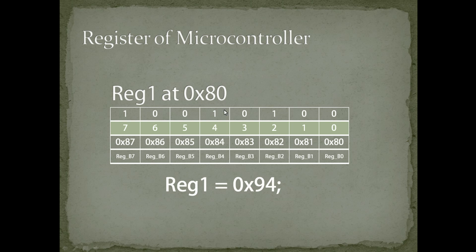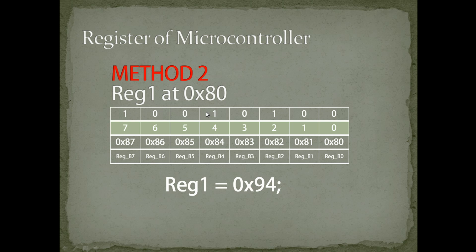I can define this address 0x80 and write reg1 equal to 0x94, so that the value 10010100 will be written to this register starting from 0x80. This is the method of writing a byte to the register in a microcontroller — Method 2. The drawback of Method 2 is that we are making bits 7, 4, and 2 as 1 by writing 0x94, but we are unnecessarily making bits 6, 5, 3, 1, and 0 as 0.